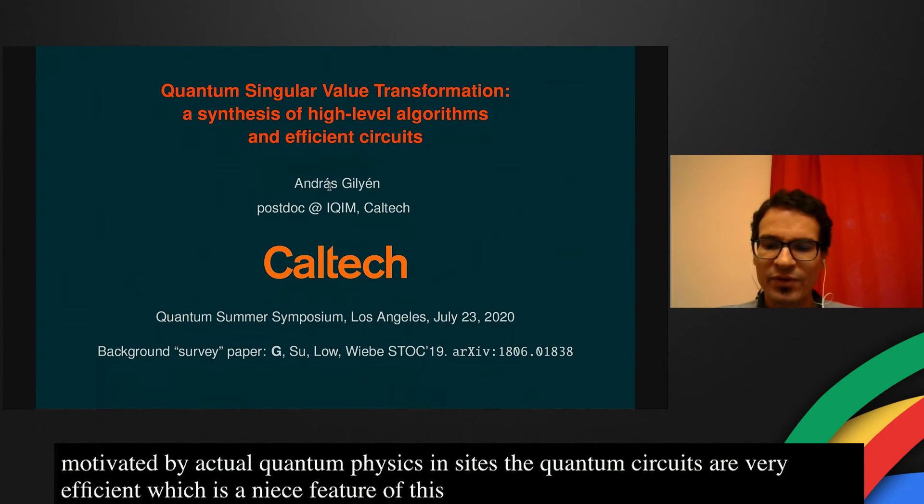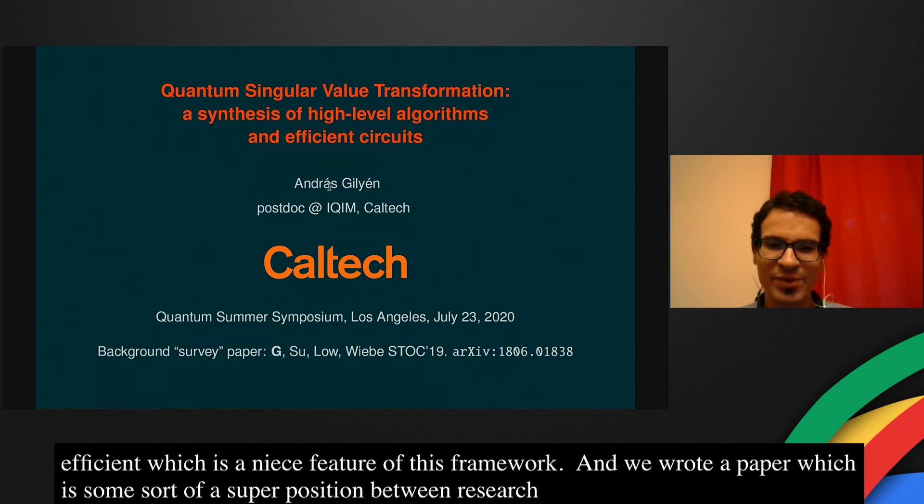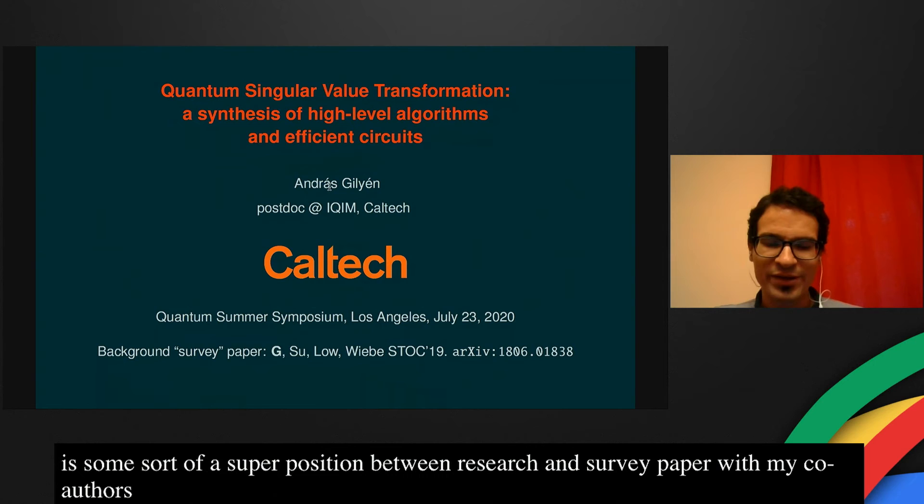We wrote a paper, which is some sort of a superposition between a research and a survey paper with my co-authors Yuan Su, Wang Haolo, and Nathan Wieb. If you have more questions about this technique after my talk, you can find out more in this paper.